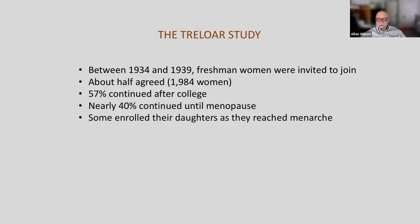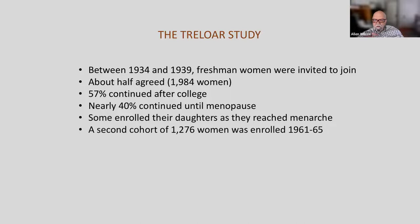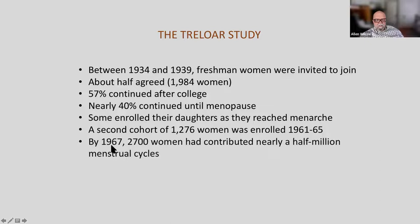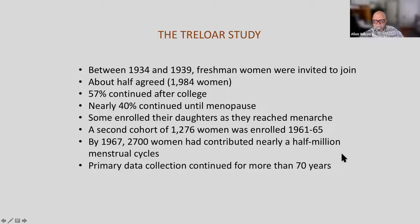Some women enrolled their daughters as they reached menarche. A second cohort was enrolled a generation later. And by 1967, 2,700 women had contributed nearly a half a million menstrual cycles. The primary data collection continued for more than 70 years, counting that second cohort and their daughters — a phenomenal prospective study.